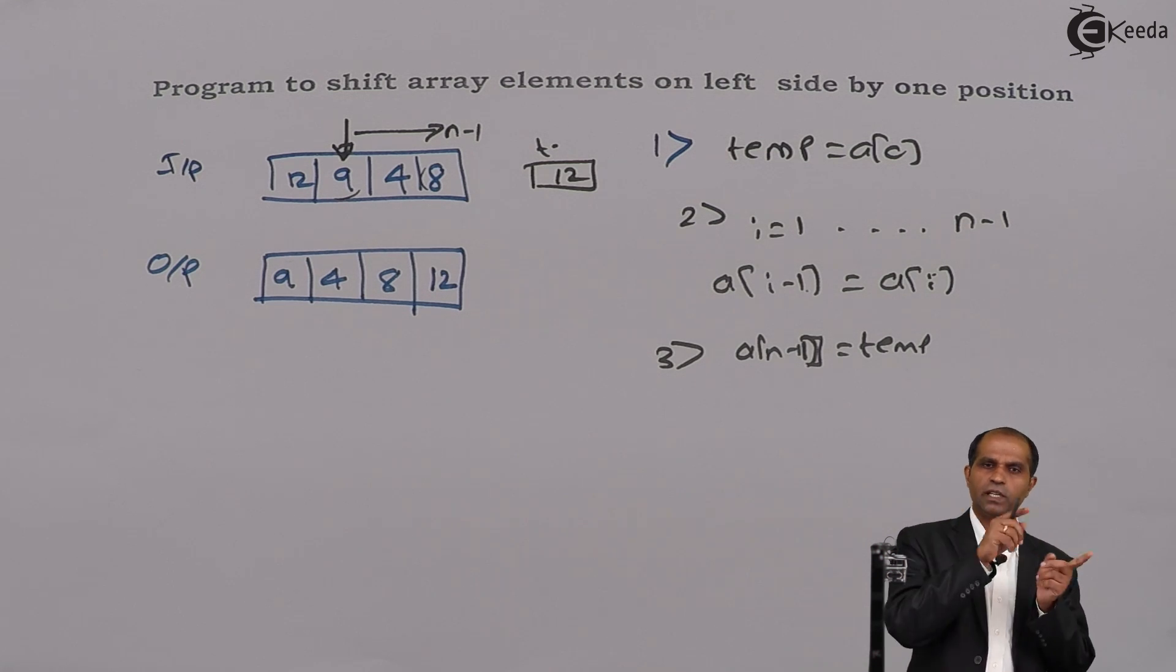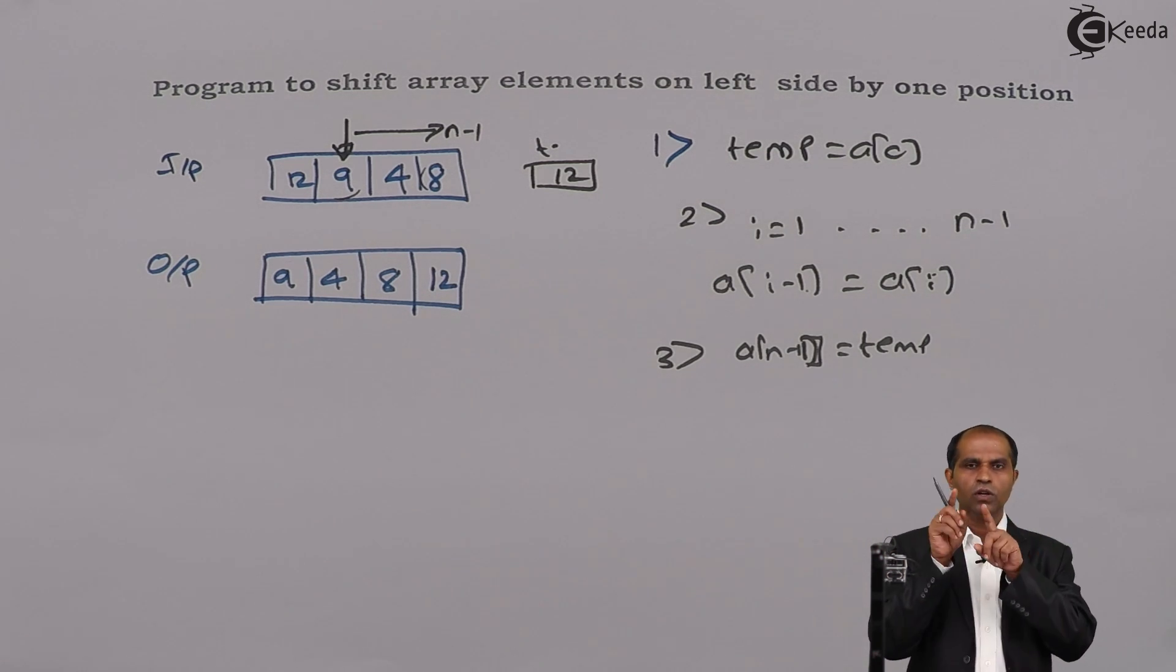Start with the index next to that towards the end. Shift all the elements towards left-hand side by one position. That is, a[i] should be transferred to a[i-1]. a[1] should go to 0, 2 should go to 1, 3 should go to 2, 4 should go to 3, and so on. n minus 1 should go to n minus 2. So in general, a[i] should go to a[i-1].